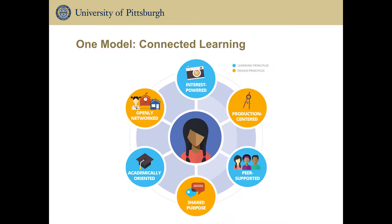There are also three design principles of connected learning. First, production-centered: how do we move kids away from just using technology for technology's sake to really producing with it? Maybe it's creating a news story using movie making, or doing interviews with voice memos and creating a story based on that. Second, shared purpose: groups can be combined when they're interested in something together. Third, openly networked: outside of schools this is easy — kids can post things on the internet and share with others. In schools it can be trickier, but there are still opportunities to share things in a safe way.